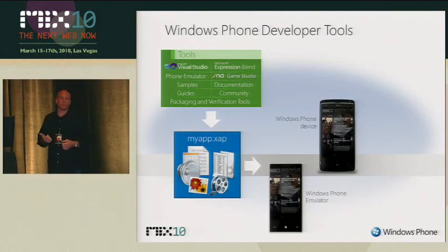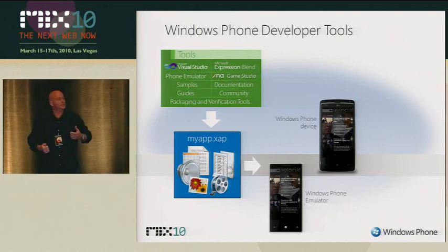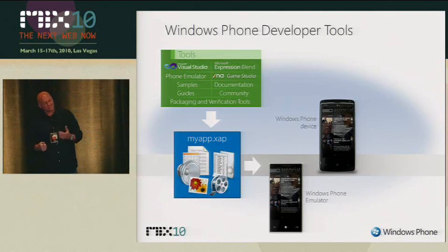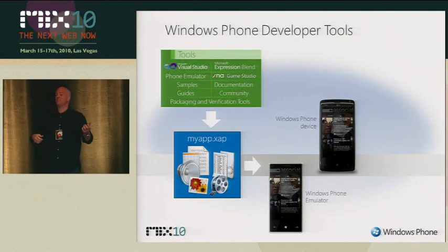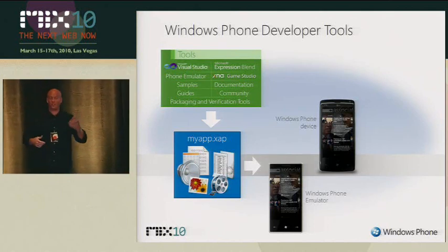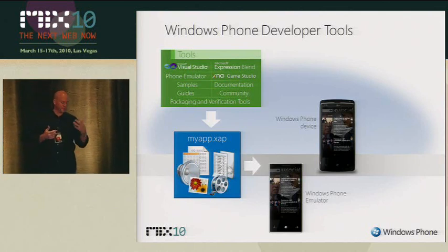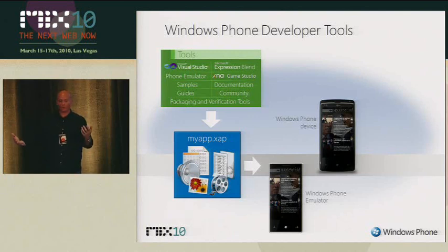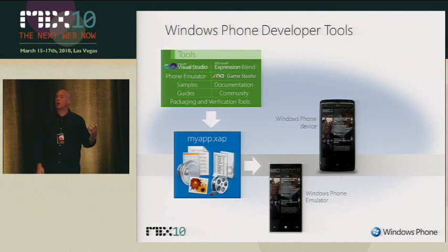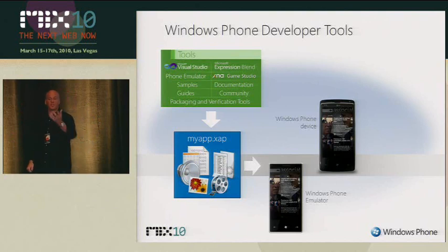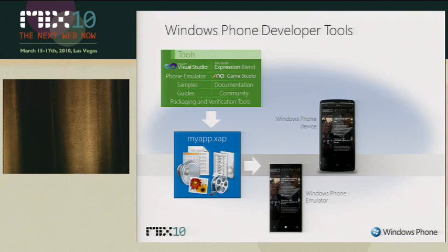The way this works: you take your Windows Phone, go to the web portal, register as a developer, and enter the ID of your phone. Via the web service, we developer-unlock your phone. From that point on, your phone can work with the developer tools. We'll have more detail on the mechanics of that in the tools talk — but it's a pretty cool system that we think is very friction-free.